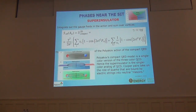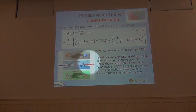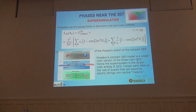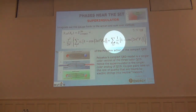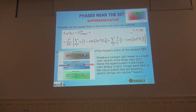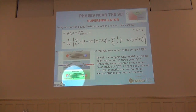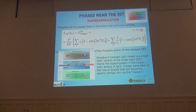Next, we integrate out all the charge degrees of freedom and immediately obtain the action corresponding to the superinsulator. We immediately see that what we obtained as the action of the superinsulator is basically a textbook result — opening Polyakov's textbook on field theory, we immediately recognize this as Polyakov's action, which tells us that the particles — there they were quarks — are connected by strings. In our case those are electric strings which connect Cooper pairs and immobilize them.